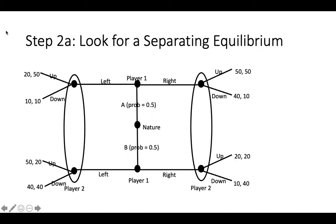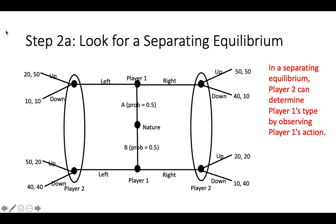Next, we will look for a separating equilibrium in this game. In a separating equilibrium, player 2 can determine player 1's type by observing player 1's action. In this game, it is easy to see that if player 1 is type A, then it is always better for them to play right, since a type A player 1's payoffs from right are always higher than from playing left. Similarly, if player 1 is type B, it is always better for them to play left.